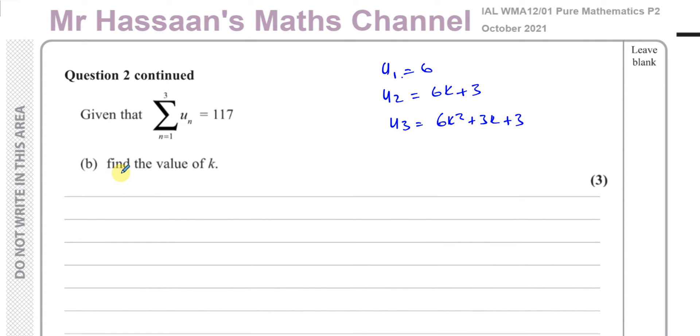Part B says, given that sigma from N equals 1 to N equals 3 of UN equals 117, find the value of K. Sigma means the sum of.